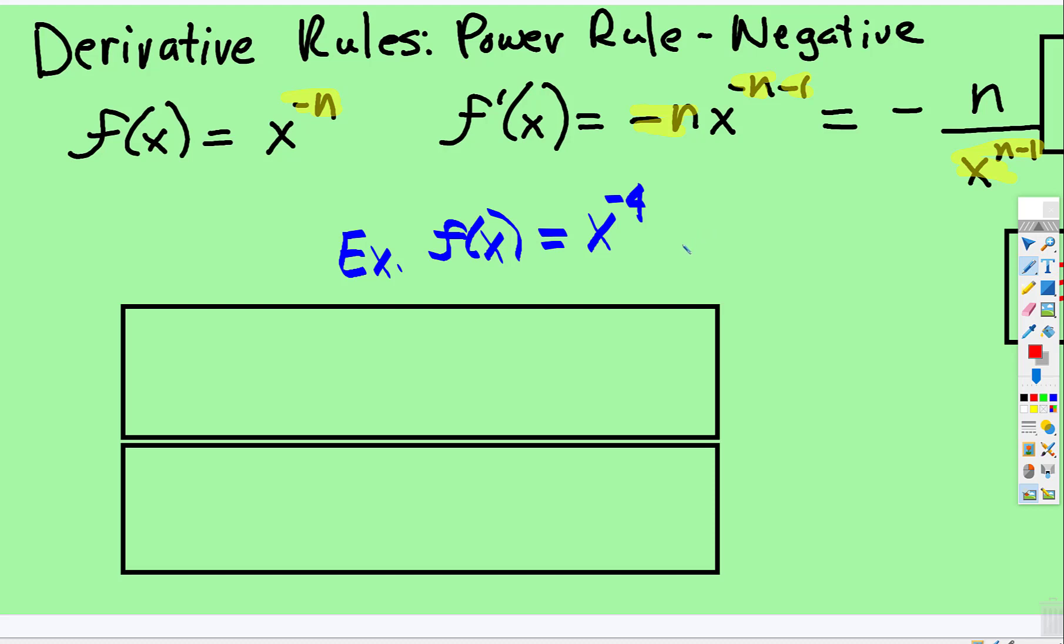I showed you down here, but I'm going to walk through it with you real quick. Negative 4 comes down in front, and then negative 4 subtract 1 is negative 5.